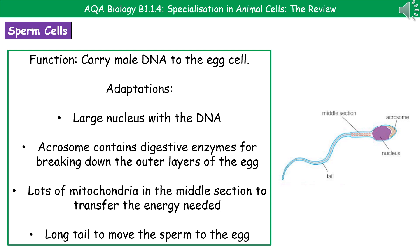In the middle section there are lots of mitochondria. The whole purpose of having mitochondria is to transfer energy, and the sperm obviously needs energy in order to move from where it enters to where it needs to fertilize. Finally, the sperm has a long tail to allow it to move to the egg, whether through water in some animals or through the female reproductive system in humans.